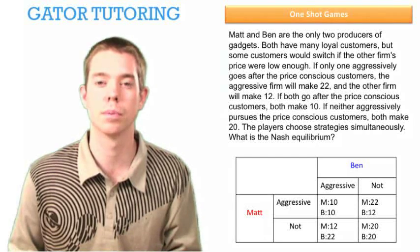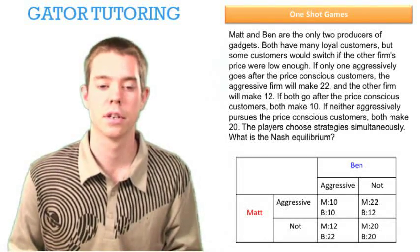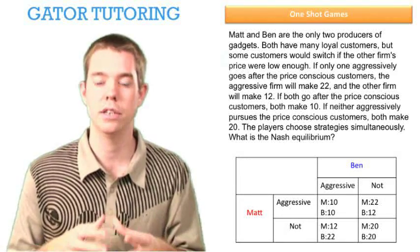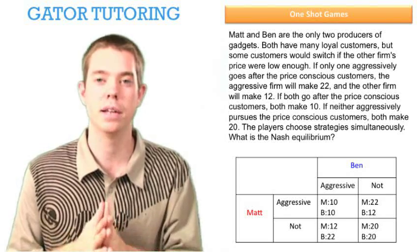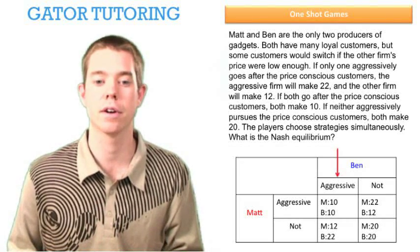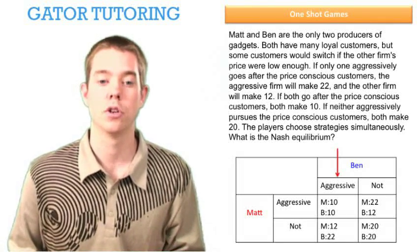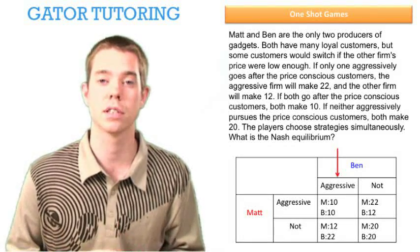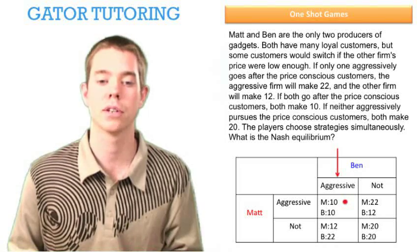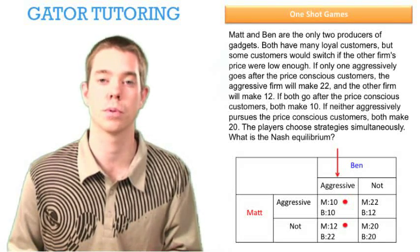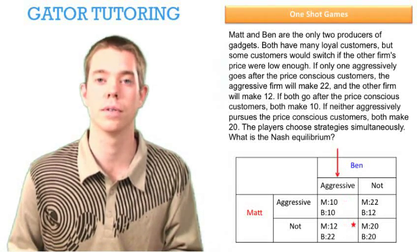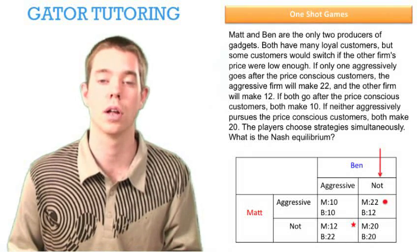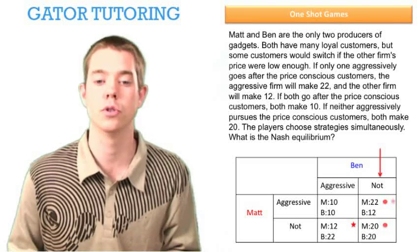So to find the Nash equilibrium — I've color coded these for simplicity — Matt is going to choose what he's going to do based on Ben's options, so we're going to compare downward. Ben can either be aggressive or not. When Ben's aggressive, Matt has a choice between $10 and $12 — he'll choose 12. When Ben is not aggressive, Matt has a choice between $22 and $20 — he'll choose 22.